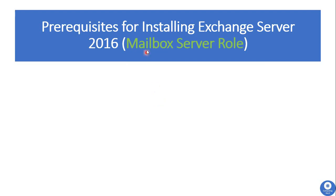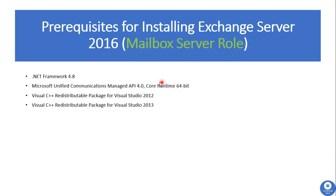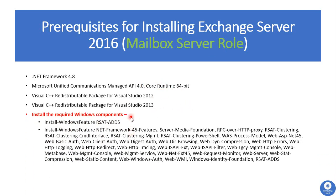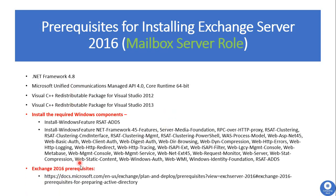Next we will see prerequisites for installing Exchange Server 2016. These are the prerequisites required to install the Mailbox Server role. We need to install certain software on the Windows Server on which we are going to install Exchange 2016, as well as required Windows components. After running two commands, all the required Windows components will get installed. The first four software must be downloaded from the Exchange 2016 prerequisites URL. After installing these Windows components and software, we need to restart the server. These are the mandatory prerequisites for installing the Mailbox Server role.